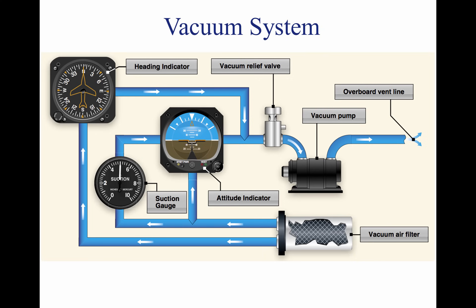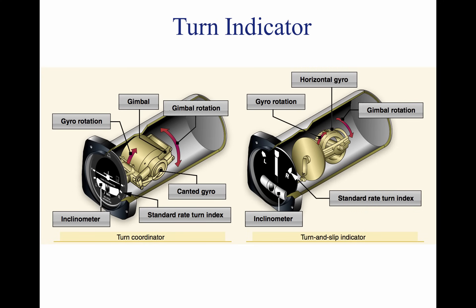It is important to monitor vacuum pressure during flight because the attitude and heading indicators may not provide reliable information when suction pressure is low. Aircraft use two types of turn indicators — turn and slip indicator and turn coordinator. Both instruments indicate turn direction and quality (coordination) and also serve as a backup source of bank information in the event an attitude indicator fails. Coordination is achieved by referring to the inclinometer, which consists of a liquid-filled curved tube with a ball inside. The gyro in the turn and slip indicator rotates in the vertical plane, corresponding to the aircraft's longitudinal axis. A single gimbal limits the planes in which the gyro can tilt, and a spring tries to return it to center.